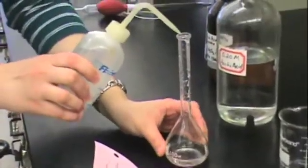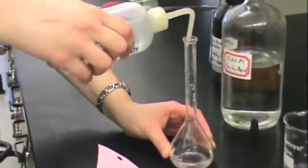At this point, you will probably have some solid on the sides of the volumetric flask, so use your wash bottle to wash this down.